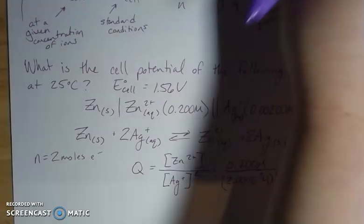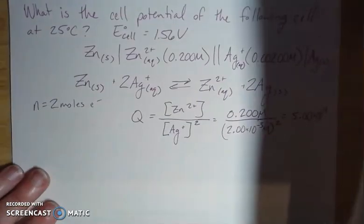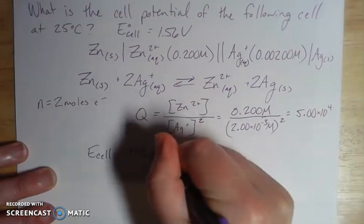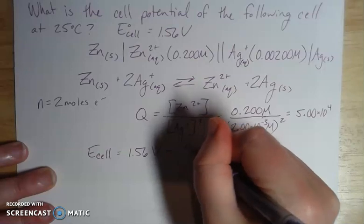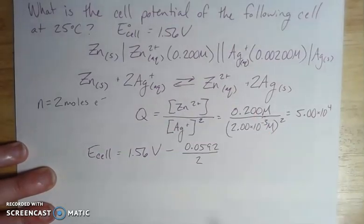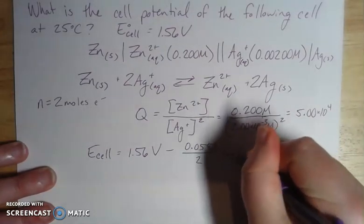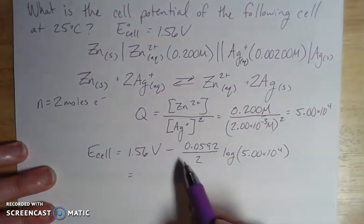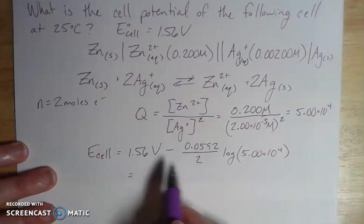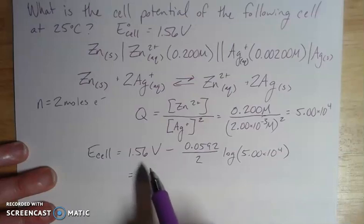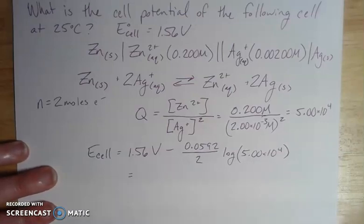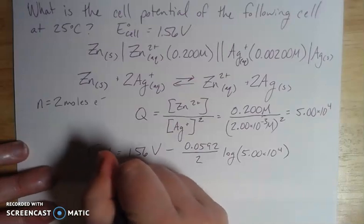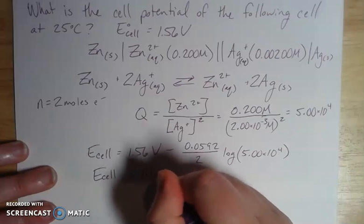What I'm solving for is what this cell potential is at these given concentrations. I'm given the E cell under standard conditions. When I plug that into my Nernst equation, E cell equals 1.56 volts minus 0.0592 over my N value, which is two moles of electrons, times the log of my Q value, which is 5.00 times 10^4. When I plug all of this in, this number is pretty tiny but it does make a difference. This is something I'm subtracting from the standard conditions because it's non-ideal. My E cell from the Nernst equation is 1.42 volts.